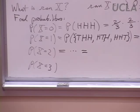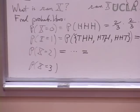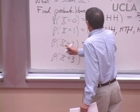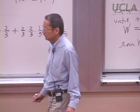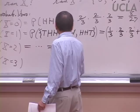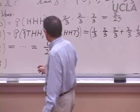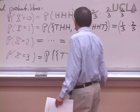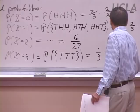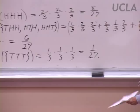The probability of the random variable taking value two is similar — there are three outcomes: tails-tails-heads, heads-tails-tails, and tails-heads-tails — giving 6/27. And the probability that the random variable gives the value three is the smallest: only 1/27.